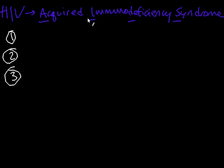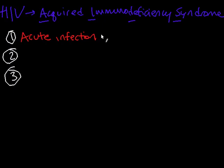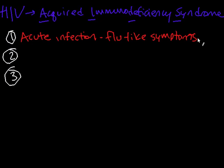When HIV first infects the body, it goes through a phase called Acute Infection. This is characterized by flu-like symptoms — a sore throat, swollen lymph nodes, fever, headache, a general feeling of being unwell. HIV isn't usually diagnosed at this stage because it looks so much like the flu or mono that it's usually missed. This stage lasts for about two weeks, and then it fades and the infection enters the next stage.